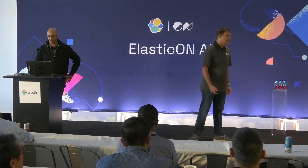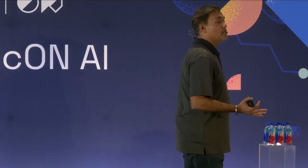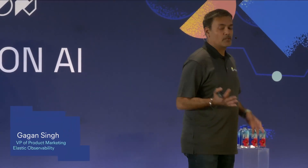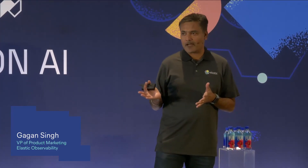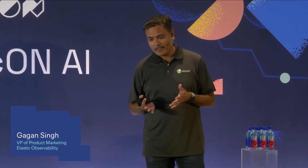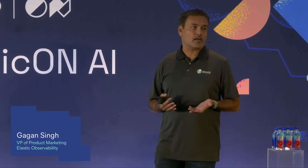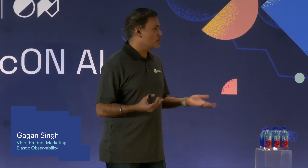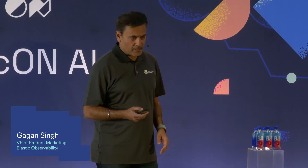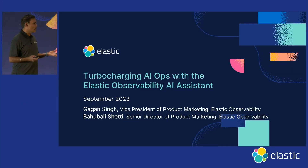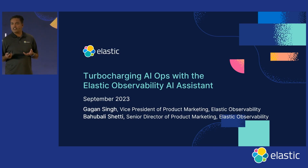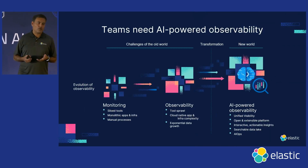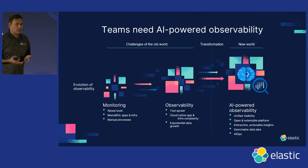Hey everyone, it's great to be here. You heard James talk about security, and you heard earlier today Ken talked about the evolution of observability. But before we go into how AI is really changing observability, let's look at the evolution of observability.